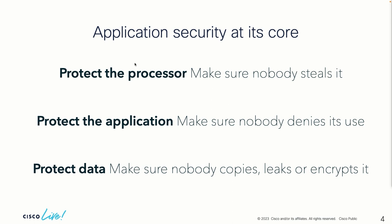If you look at application security at its core, there are really three things you want to protect. The processor — you don't want anybody doing Bitcoin mining on your processor. We've actually had incidents where we set up a sandbox and someone was calculating Bitcoin on it. You want to protect the application itself — no denial of service attacks, ensure it does what you think it's doing. And most importantly, make sure that nobody copies, leaks, or encrypts your data.